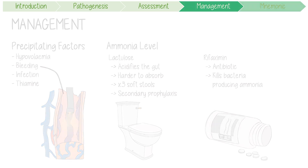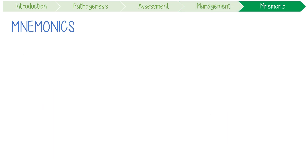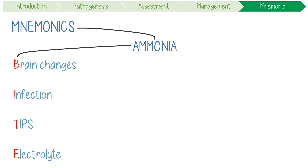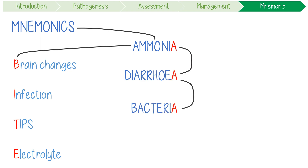To recall all of this, remember mnemonics that revolve around the word ammonia. When you smell ammonia, it has a real BITE to it — this tells you the precipitating factors of hepatic encephalopathy. To get rid of ammonia, remember what it rhymes with in med lingo: ammonia, diarrhea, and bacteria. This prompts you to treat a patient with lactulose to make them poop lots, and rifaximin to kill the bacteria producing ammonia.